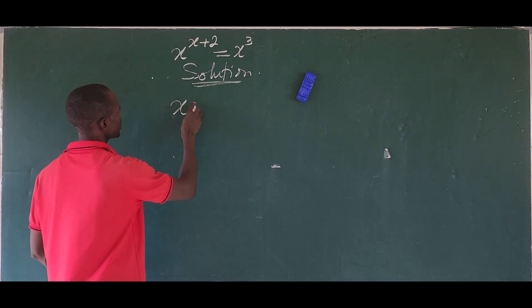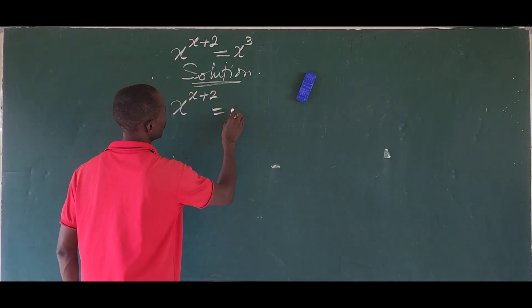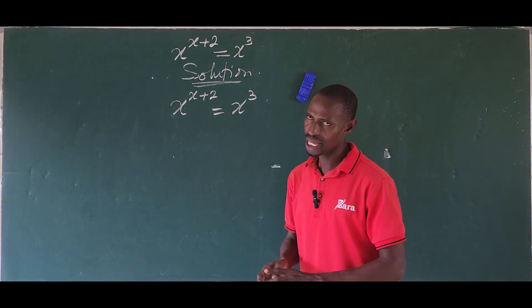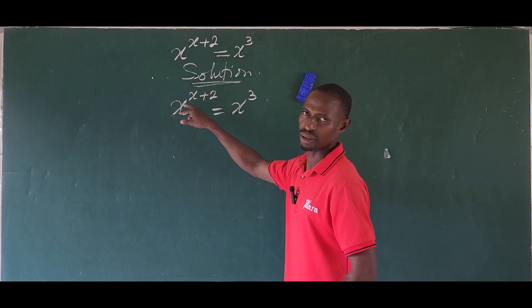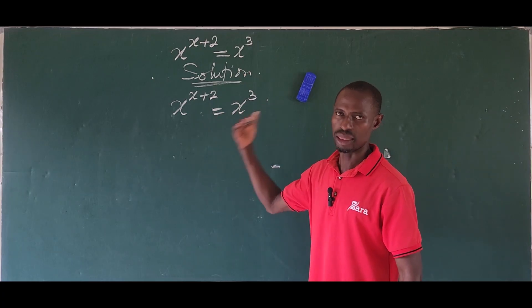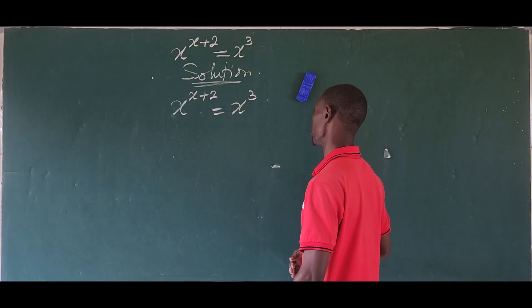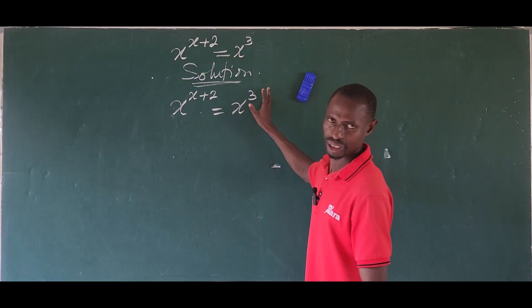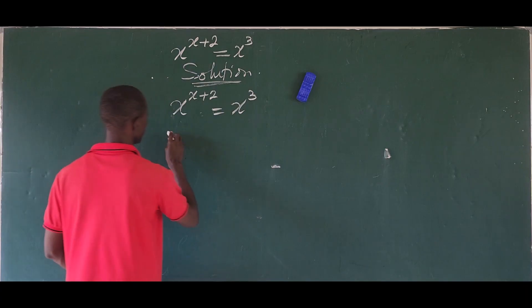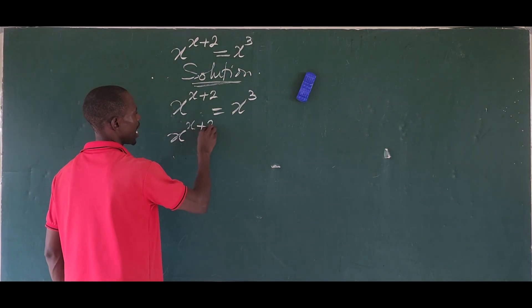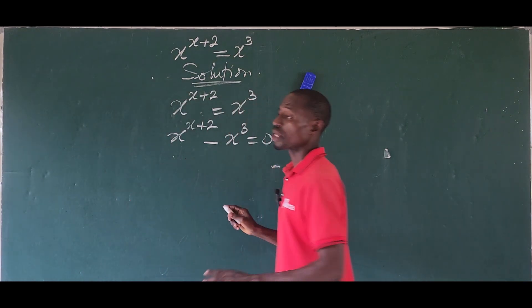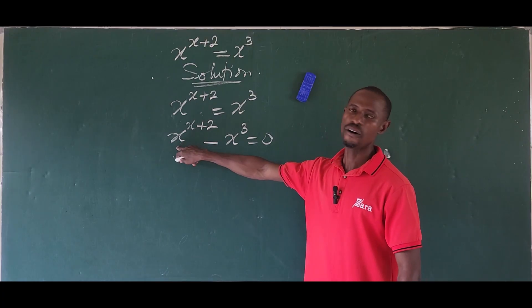Let's put down the question: x to the power of x plus 2, equal to x to the power of 3. We can find the value of x by rewriting this. We want to move the quantity on the right hand side to the left hand side of the equation, giving us x to the power of x plus 2, minus x to the power of 3, equals 0.